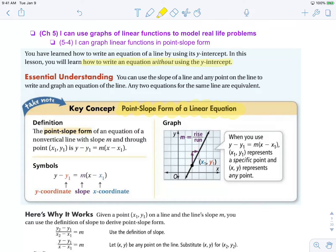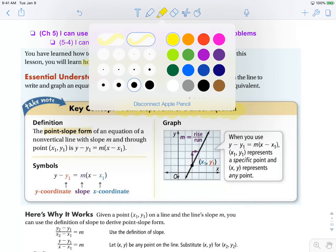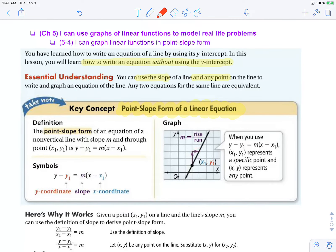The essential understanding is that you can use the slope of a line and any point on that line to write and graph an equation of a line. And we have to remember that even though it's a different form of a line, these two equations for the same line are equivalent.